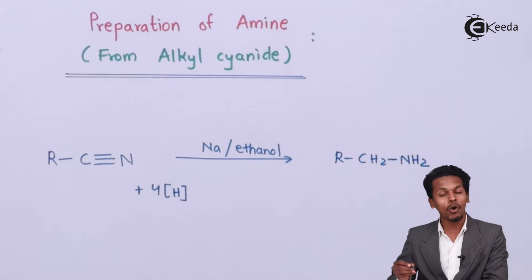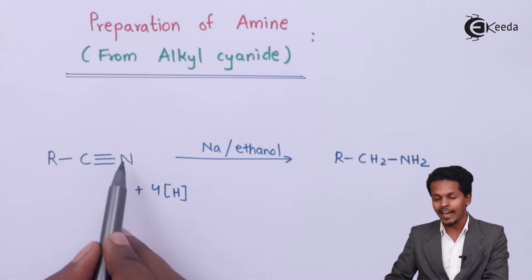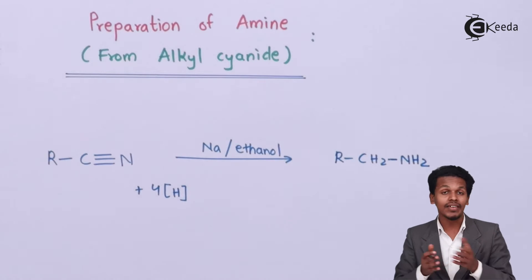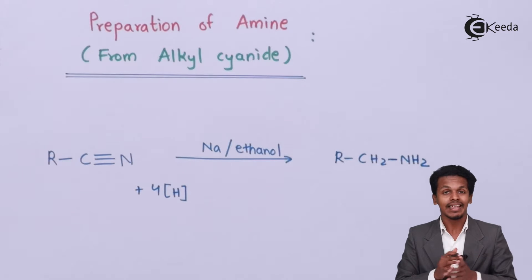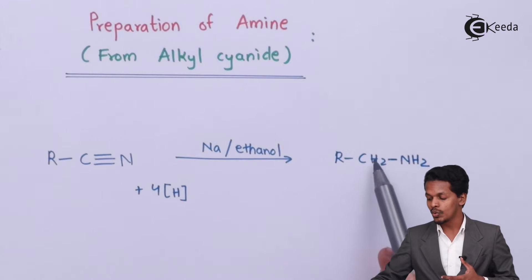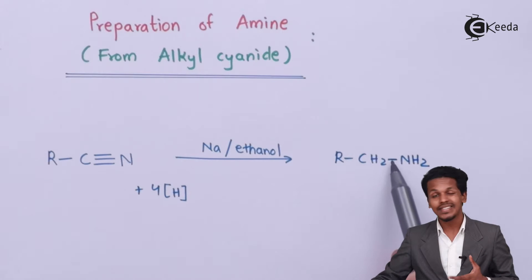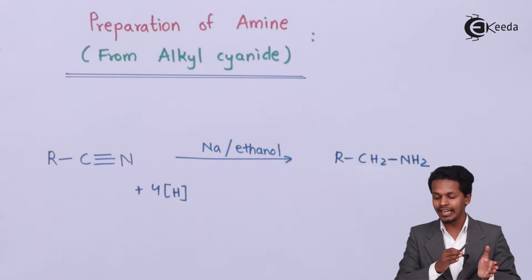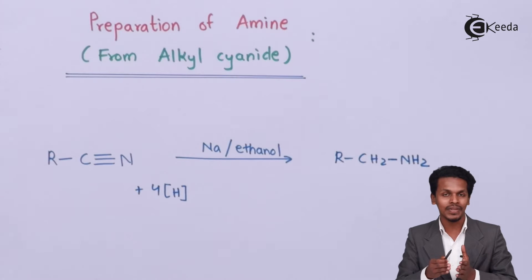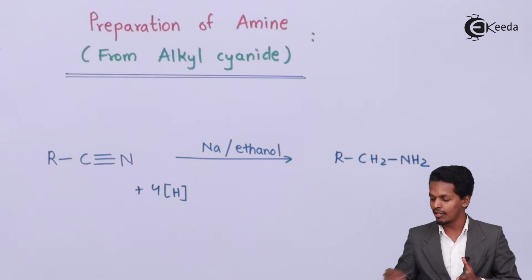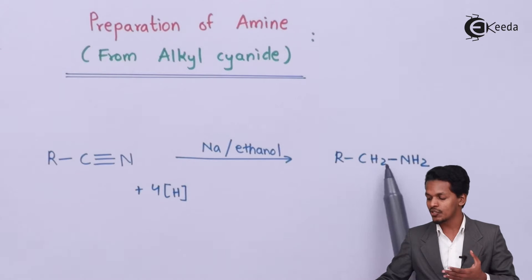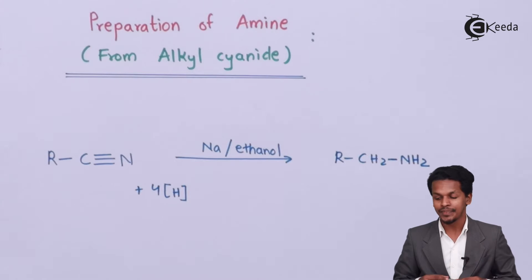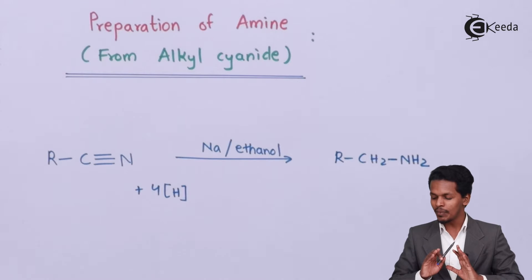Four moles of nascent hydrogen are sufficient to convert R-CN into R-CH₂-NH₂. The bond between carbon and nitrogen, which was a triple bond in the cyanide, is converted into a CH₂ single bond NH₂. So we can convert a CN group into a CH₂NH₂ group, preparing primary amines. This reaction is known as Mendius reduction.